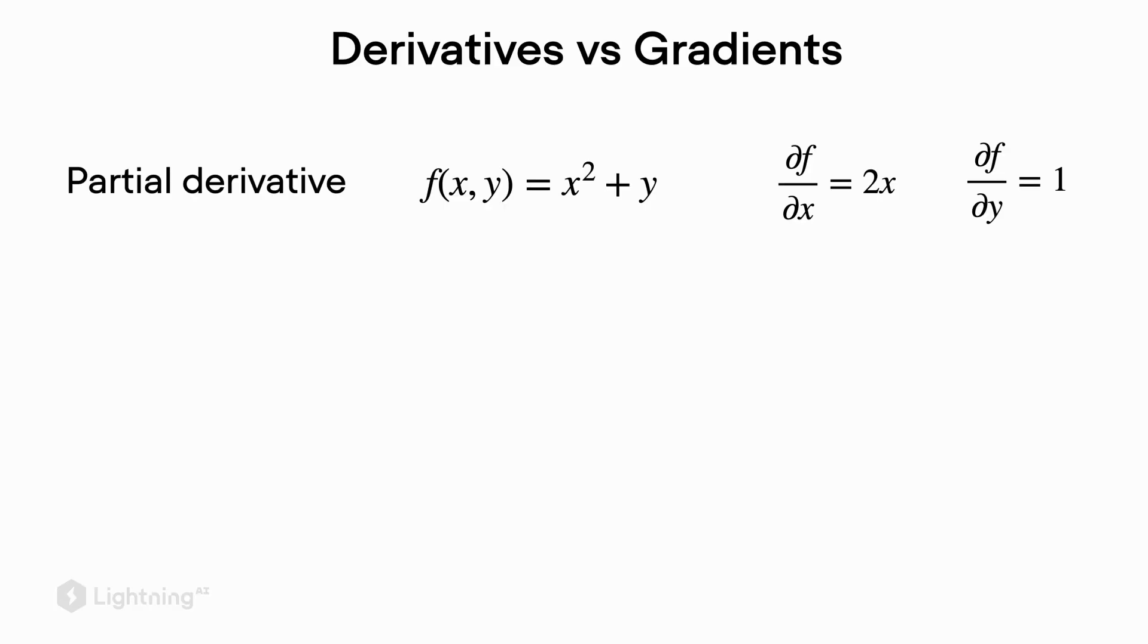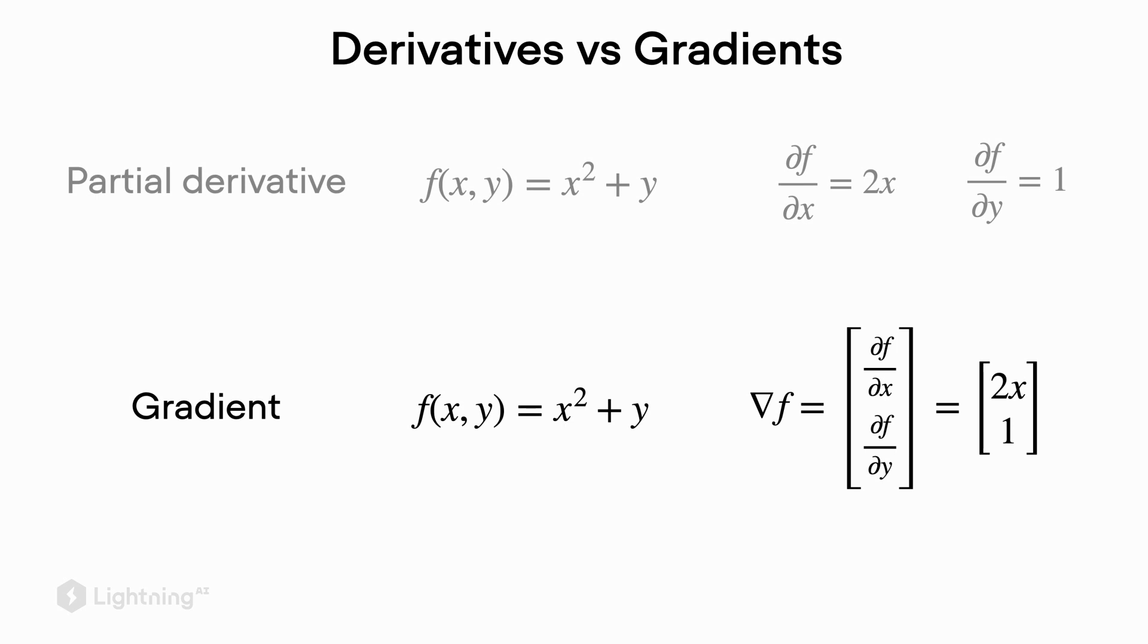So how is this actually now related to the gradient of a function? So the gradient of a function is essentially just a way of writing down these partial derivatives in a vector form. So here if we compute the gradient of f we have the vector of the partial derivatives 2x and 1.